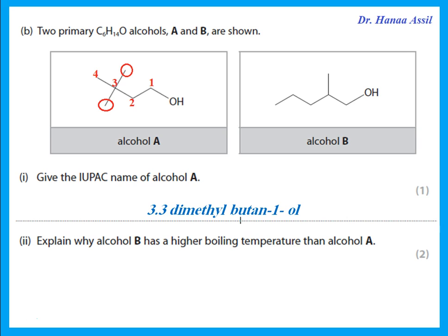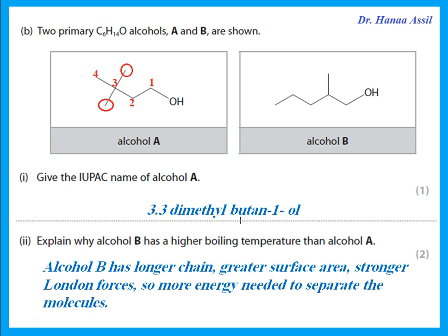Explain why alcohol B has a higher boiling temperature than alcohol A. Alcohol B has less branching — it is a longer, less branched molecule with a larger surface area. It will have stronger London dispersion forces between molecules, so more energy is needed to separate them. More branching leads to lower boiling points.